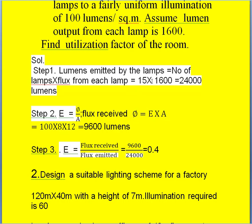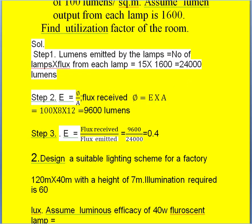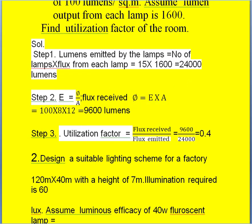The flux emitted by the lamps is also known. Now we calculate the utilization factor, which is flux received by the surface divided by flux emitted by the lamps. Flux received is 9600 and flux emitted is 24,000. Simplifying, we get 0.4.